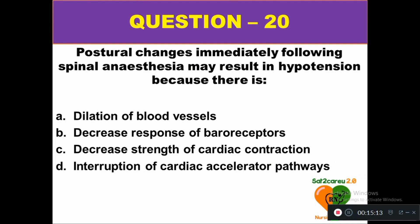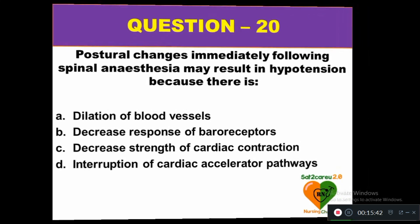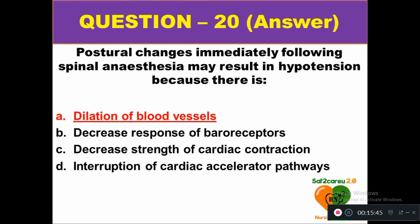Question 20: Postural changes immediately following spinal anesthesia may result in hypotension because there is: option A dilation of blood vessels, option B decreased response of baroreceptors, option C decreased strength of cardiac contraction, option D interruption of cardiac accelerator pathways. The right answer is option A — dilation of blood vessels after spinal anesthesia can result in hypotension.